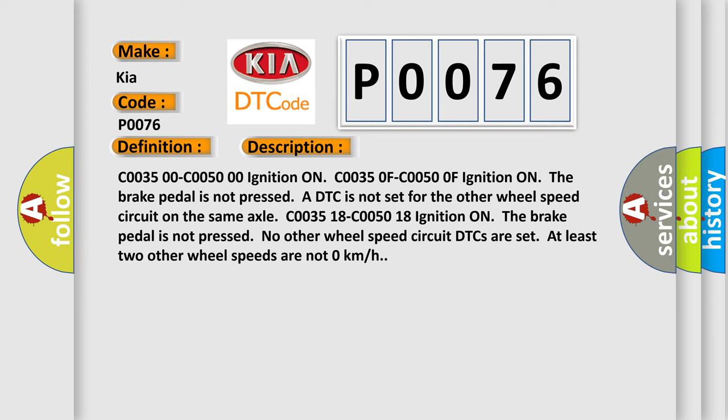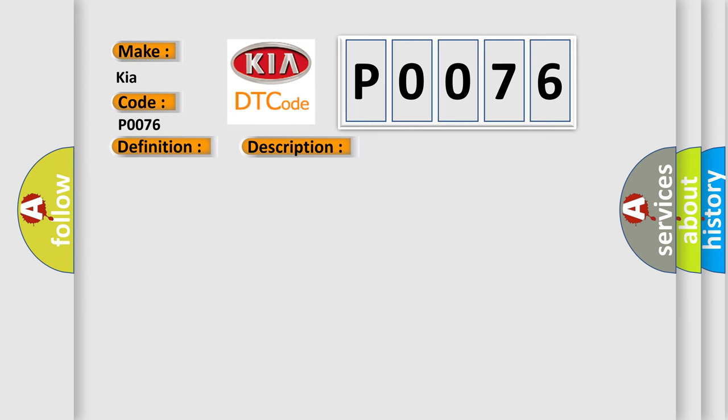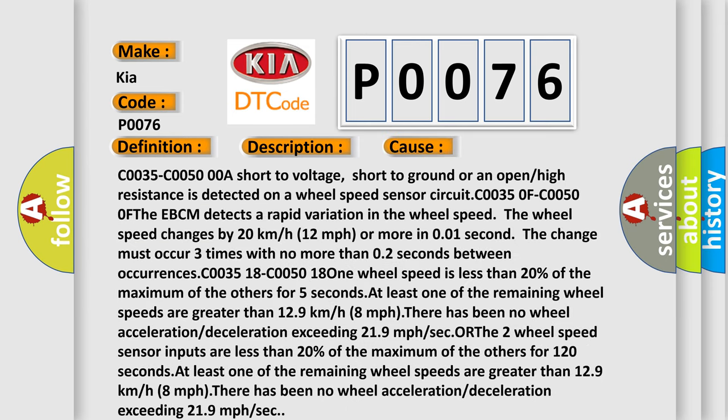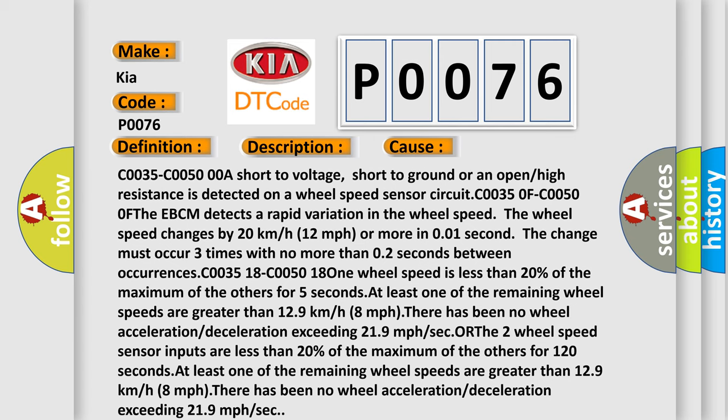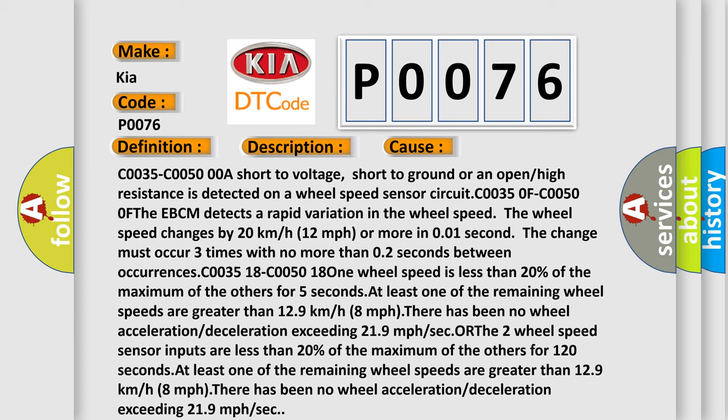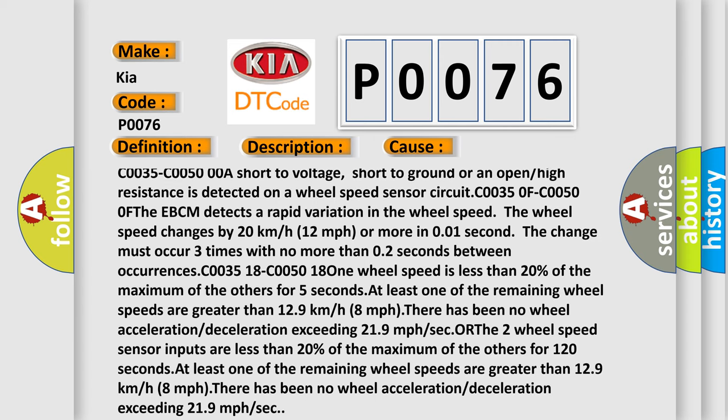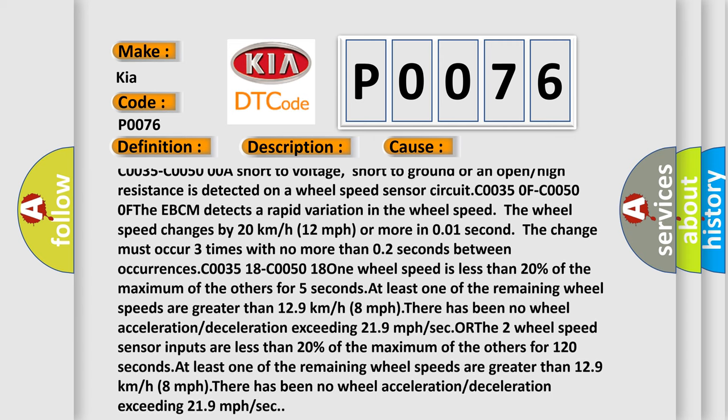This diagnostic error occurs most often in these cases. C0035-C0050 0A: short to voltage, short to ground, or an open or high resistance is detected on a wheel speed sensor circuit.